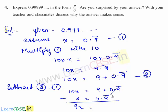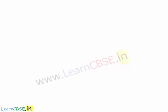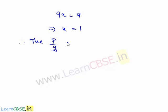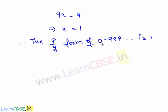Now we shall subtract equation 1 from equation 2: 10x equals 9 plus 0.9 bar, minus x equals 0.9 bar. Therefore we have 9x is equal to 9, which implies x is equal to 1. Therefore the p by q form of the given decimal expansion 0.999 and so on is 1. We can also say by observation that 0.999 and so on is approximately equal to 1, which is a rational number.